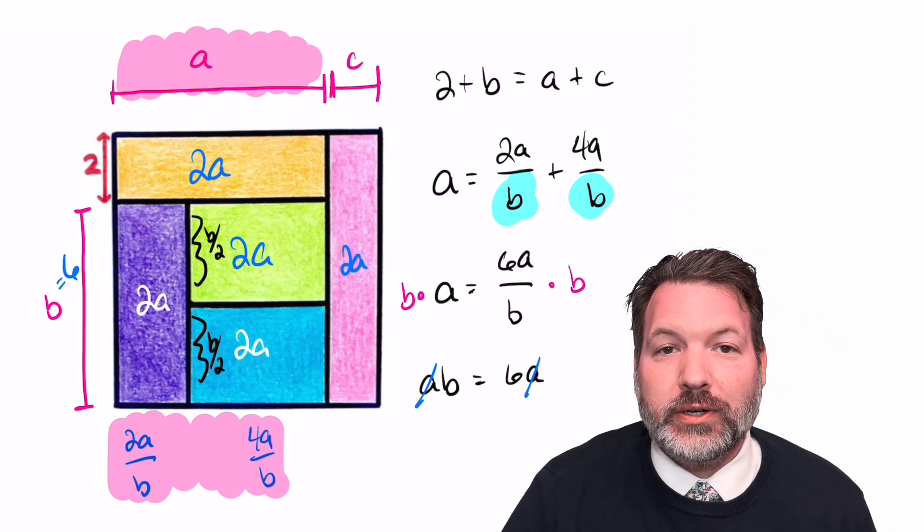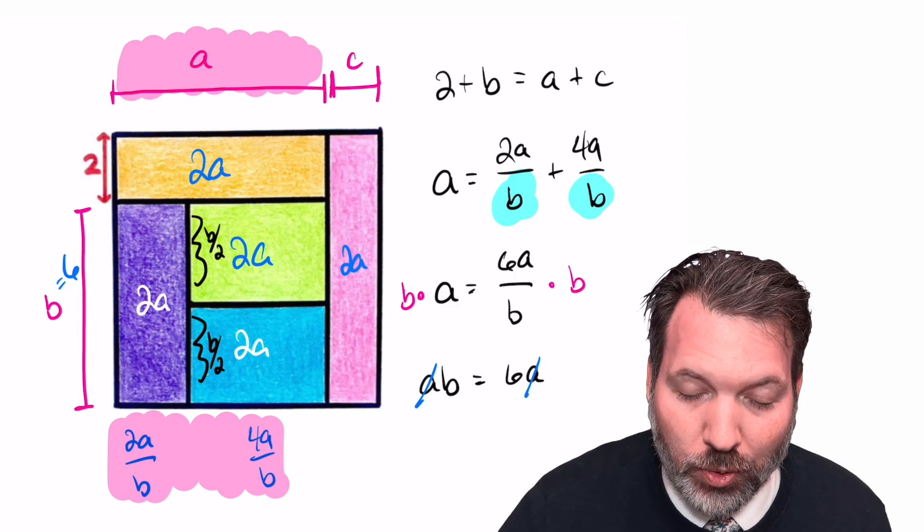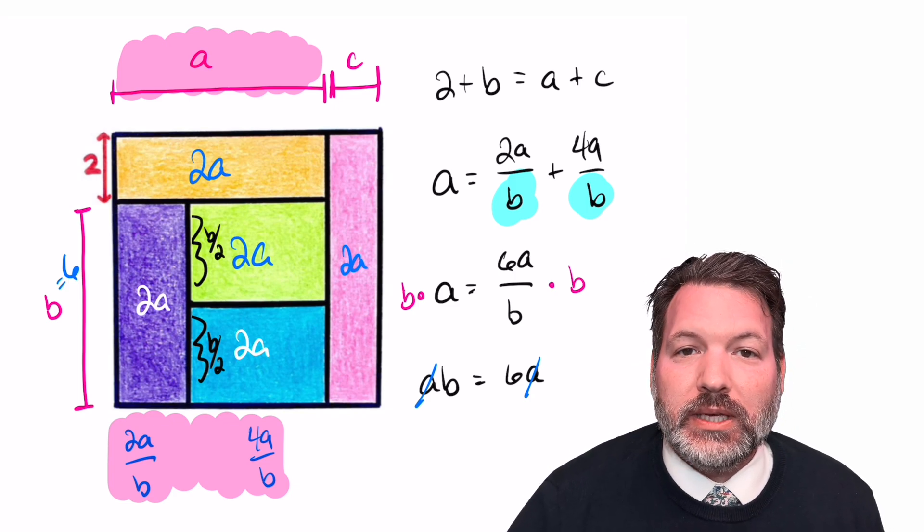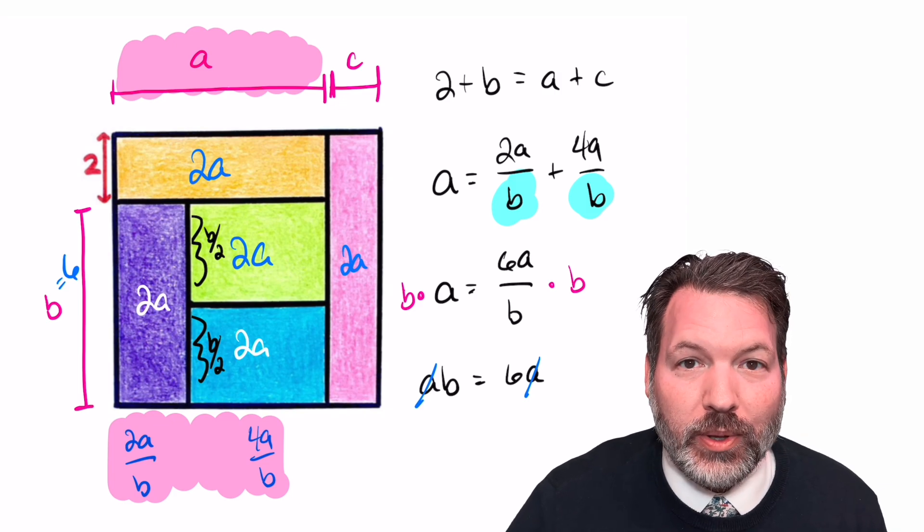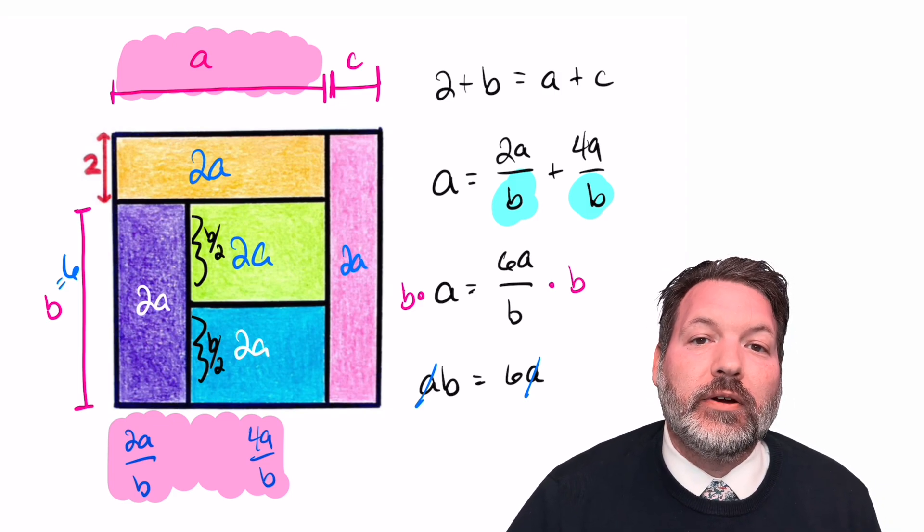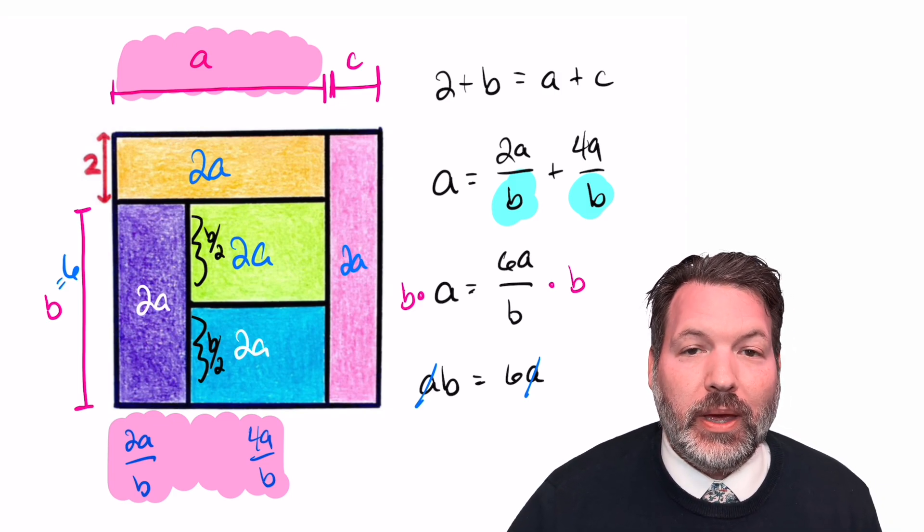And actually, as far as the area of the square is concerned, we're done now. 6 plus 2 is 8. It's a square, so it's got to be 8 by 8, and therefore its area is 8 times 8 makes 64.